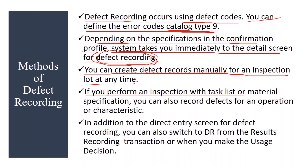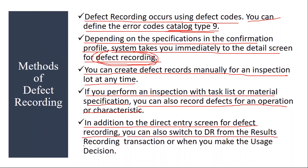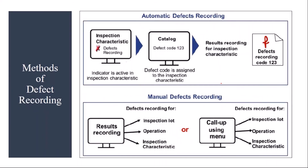If you perform an inspection with a task list or material specification, you can also record defects for an inspection operation or characteristics. You can do defect recording for a characteristic directly or even for an operation. In addition to the direct entry screen for defect recording, you can also switch to defect recording from the results recording transaction or when you make the usage decision — instead of a separate transaction. So you can do defect recording manually and also automatically — we will discuss both.